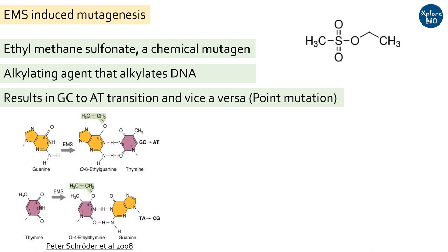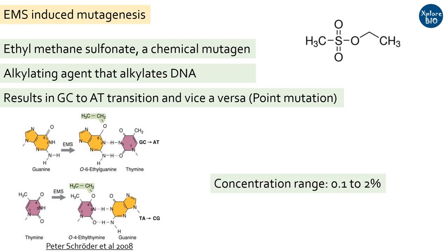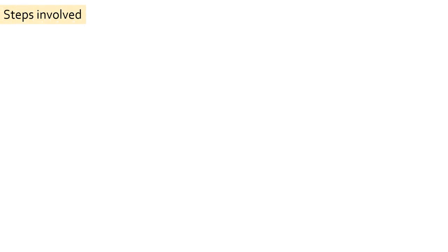EMS concentration ranging from 0.1 to 2% and exposure of seeds for a few hours to several hours has been practiced by scientists, depending upon the crop, its survival rate, and extent of mutation required. Coming on to the basic steps involved in generating mutant plants, taking an example of wheat.